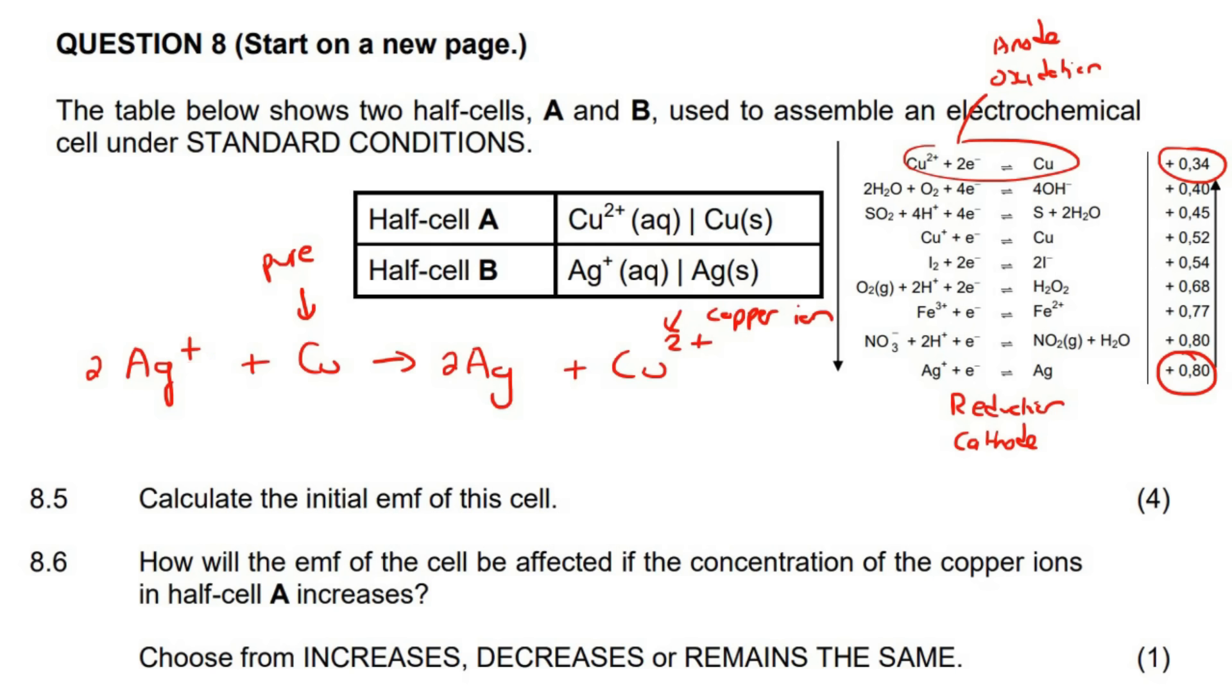So it says here, how will the EMF of the cell be affected if the concentration of the copper ion is increased? So if you increase this, think about the way equilibrium works. If you increase this one, then the system will try to decrease that. So how will it do that? By will it go in the forward direction? No, it won't go in the forward direction. Because if it goes in the forward direction, then this will become even more.